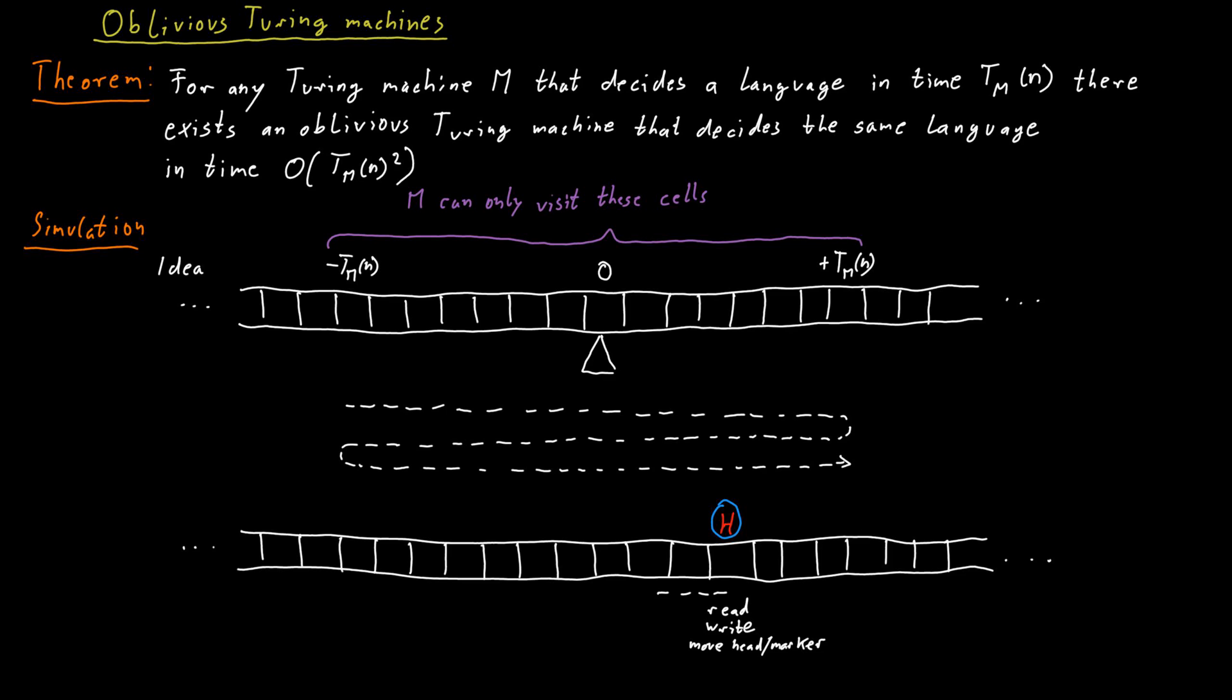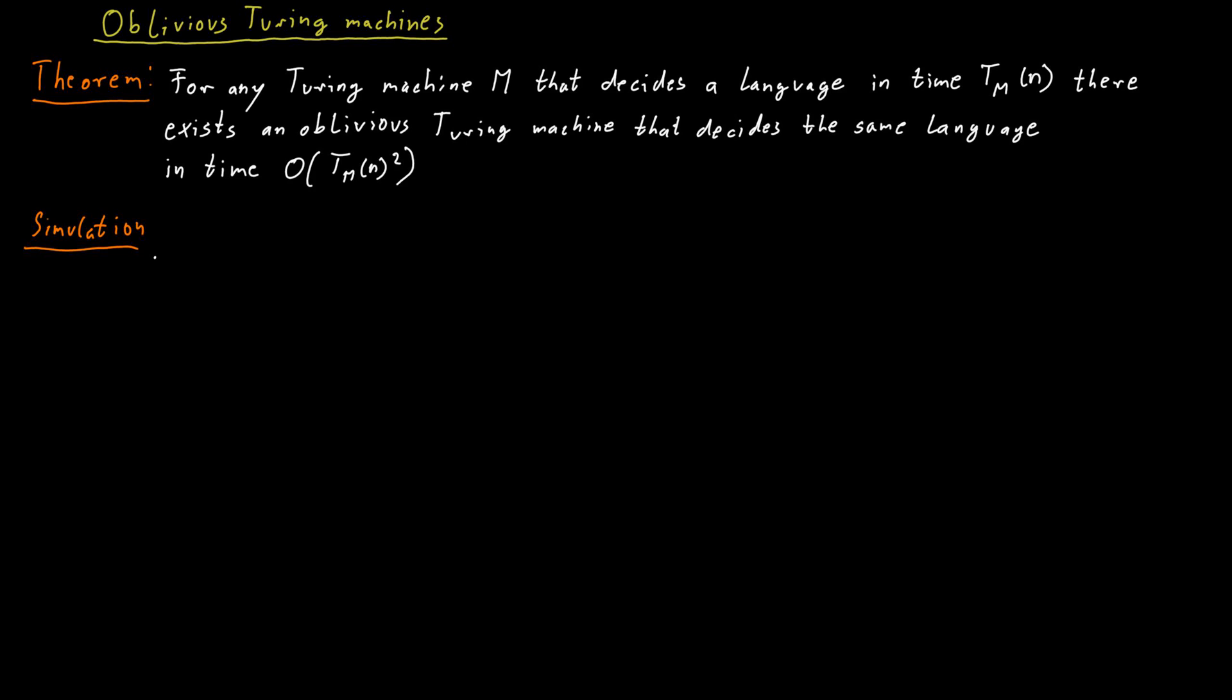And we can perform whatever computational step the machine M would have done at this point. And then once we've done that, we pass further down the pattern, further to the right to the right end without really doing anything. So that's the rough idea. More specifically, we do the following. For each cell in the tape, we store not only a symbol of the alphabet, but also some extra symbols.